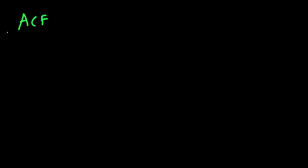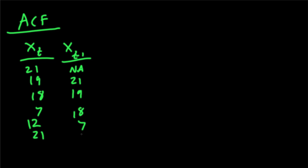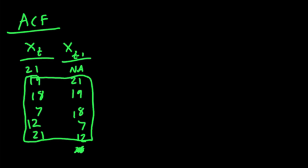Before we start here we need to go back to the ACF and look at this a little bit more. We had x of t and we had some values like 21, 19, 18, 7, 12, and 21. Then we do the autocorrelation function which is x of t minus 1. So again we have some missing value here — NA — and then you have 21, 19, 18, 7, 12. We take the correlation of these two pieces and this gives us the ACF of lag 1.